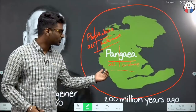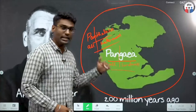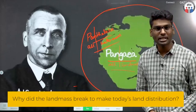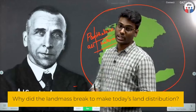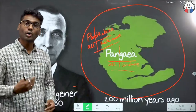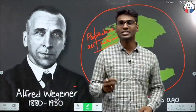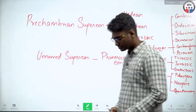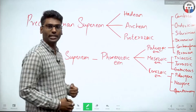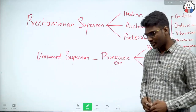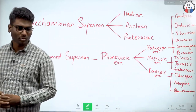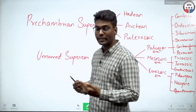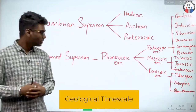Now what happened to this old land mass — did it break, and did it form today's distribution? What are the reasons, and how did Alfred Wegener prove those reasons? What evidences did he have? All these things we will look at in the course of this lecture. Before I start, let me ask you: if someone asks your age, you can tell them based on your date of birth. Similarly, to understand the earth's age and changes, we need a reference system.